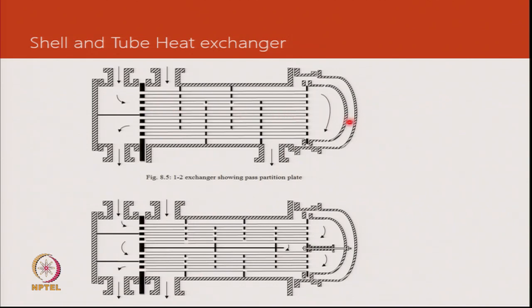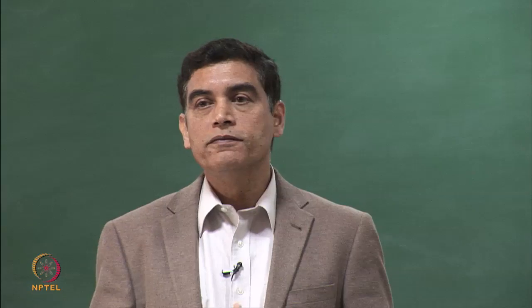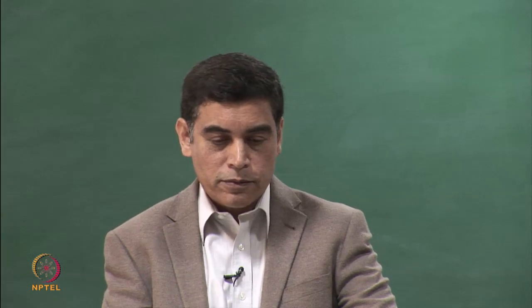Depending on the design, it could be a 2-pass or a 4-pass system, and the baffles determine how many times the fluid comes in contact with the tubes. The space between the tube sheets is enclosed, so the key requirement is that we must be able to seal the two fluids apart — we do not want water entering the refrigerant path or vice versa, as that risks performance.